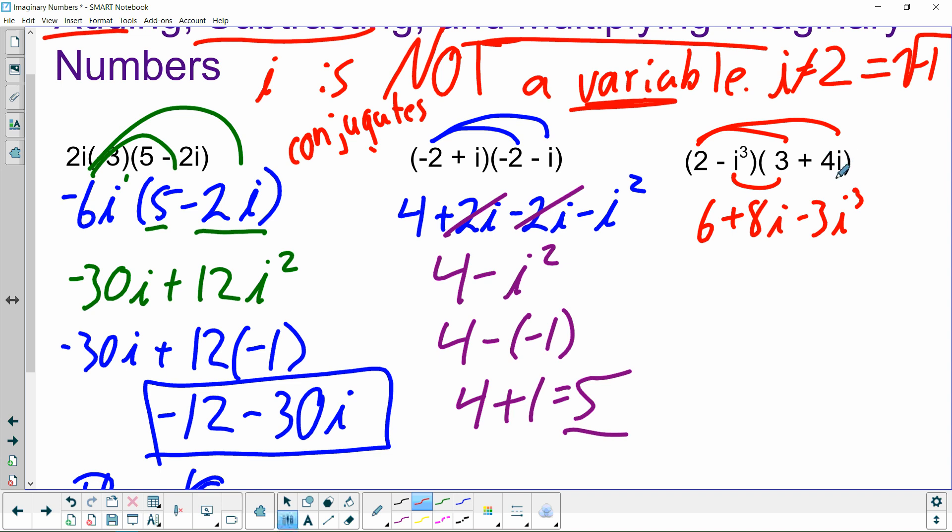Alright, let's start by cleaning up these i's to powers before we get ahead of ourselves. So, I'm just going to bring down these two terms. 6 plus 8i. i to the third, remember, is negative i. So, this is negative 3 times negative i. And then i to the fourth, remember, is positive 1. So, this is negative 4 times 1 is negative 4. Negative 3 times negative i is going to be positive 3i. So, we have 6 plus 8i plus 3i minus 4.